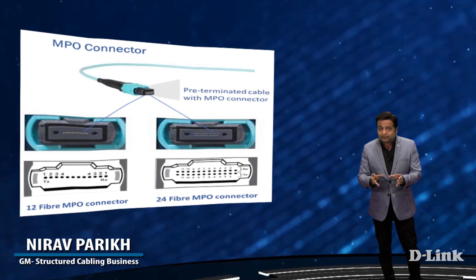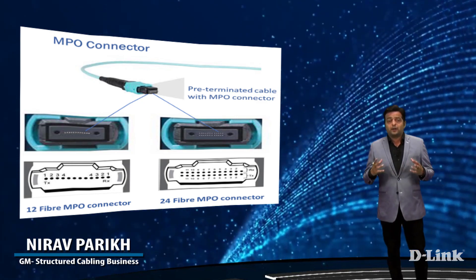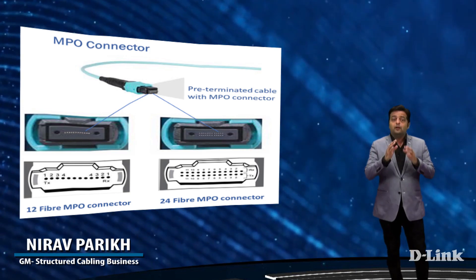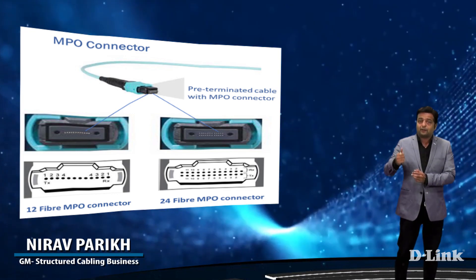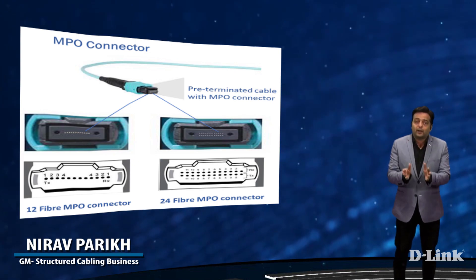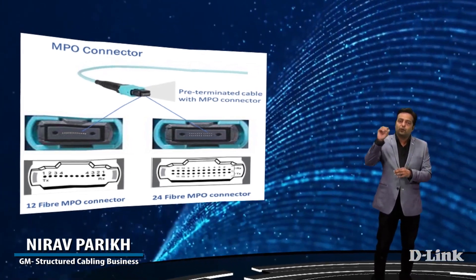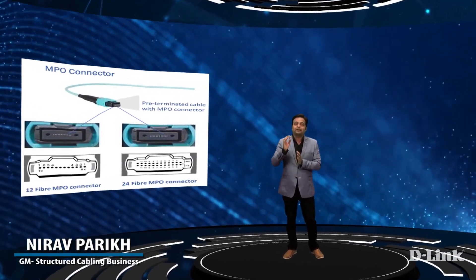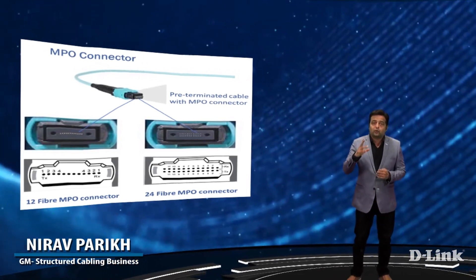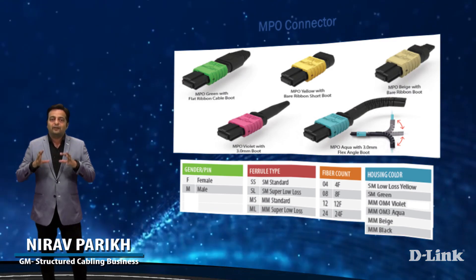Let us discuss what an MPO connector is — a factory-fitted connector used in pre-terminated cabling for higher fiber count. While we know different types of fiber connectors like SC, LC, FC, and ST, MPO connectors are fiber connectors comprised of multiple optical fibers. Defined as an array connector having more than two fibers, MPO stands for Multi-fiber Push-On connector. The most common type is MPO-12, which has one row of 12 fibers. Higher density connectors are also available composed of several rows of 12 fibers, for example 24 fibers. MPO-16 exists in the market with one row of 16 fibers, and MPO-32 is made up of two rows of 16 fibers each. MPO connectors can be color coded to easily distinguish between different types and specifications.